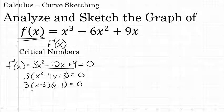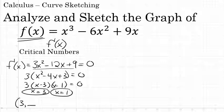Setting each of those factors equal to zero, I find that the critical numbers are x = 3 and x = 1. When sketching this graph, 3 and 1 are possible x values for points that would be relative maxes or relative mins. The point where x = 3 has y-coordinate f(3): substituting 3 into the original function gives 3³ - 6(3²) + 9(3) = 0. Substituting 1 gives 1³ - 6(1²) + 9(1) = 4. These two points will possibly represent maxes or mins.